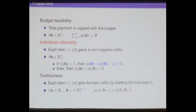Second, a mechanism must be individually rational — that is, a mechanism must attract the sellers to participate. In any case, whenever a seller decides to join the mechanism, he always gains a non-negative utility, where the utility is defined as the difference between the payment to him and the cost of his item. Finally, a mechanism must be truthful: in any case, the seller always gets his utility maximized by bidding the true cost, regardless of the other people's bids.